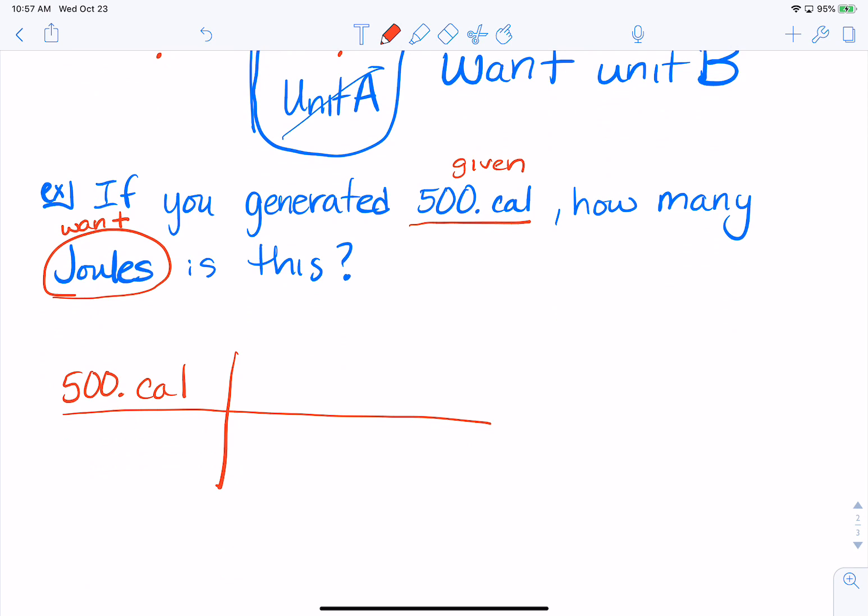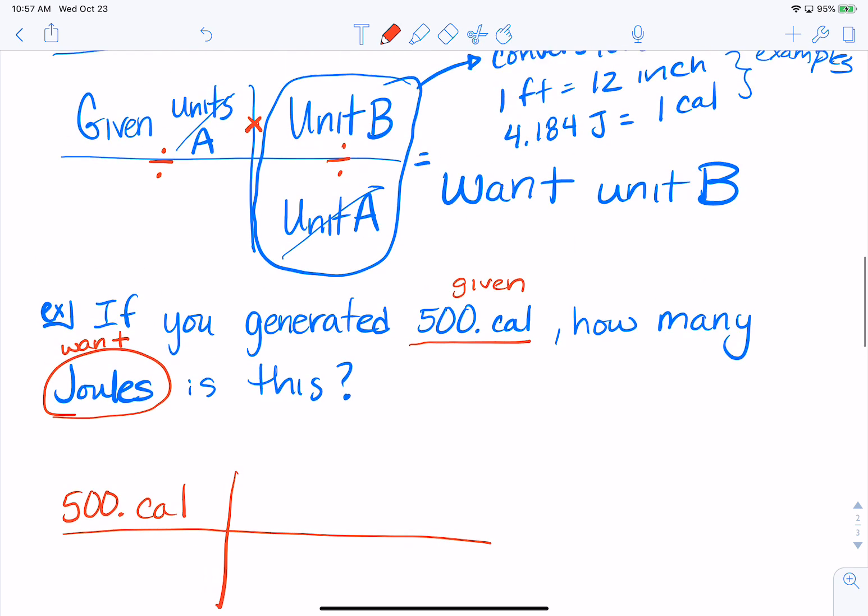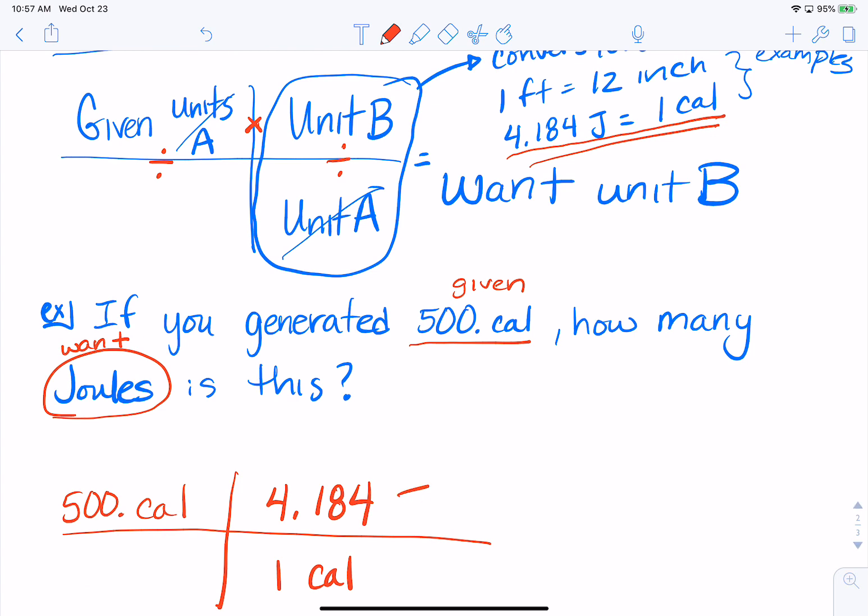I know I need a conversion factor that's going to compare calories to joules. We know this one up here. This one compares calories to joules. So I know that one calorie, I'm going to put that one on the bottom. Why would I want to put that one on the bottom? That way the units cancel. Good. 4.184 joules. So I make sure I set it up correctly.